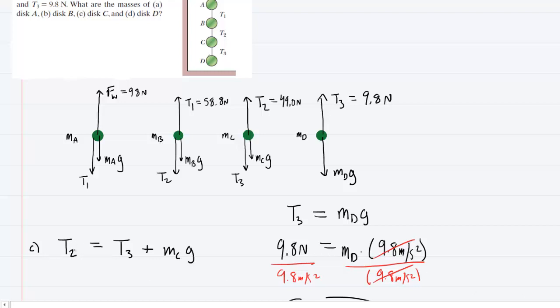Remember we're just using magnitudes here and that's why all these values are positive. So T2 was given as 49 newtons. T3 we know was 9.8 newtons, plus the unknown mass times the 9.8 meters per second squared.